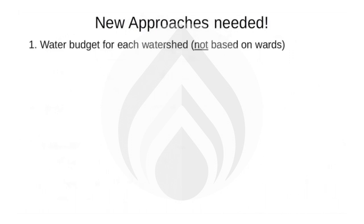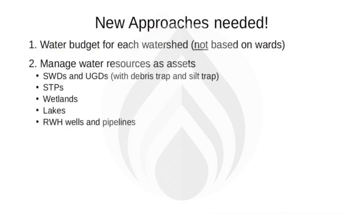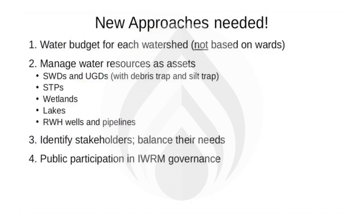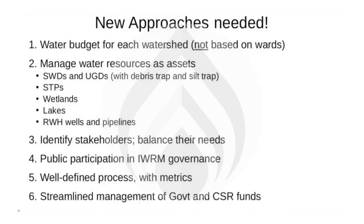This calls for a paradigm shift in multiple areas. For each watershed, set up a water budget accounting for incoming and spent water. The water resources will be our lifeline — we must treat them as precious assets. Identify all stakeholders in the area and balance their needs. Involve the public in water resource management and make all data public. Establish well-defined processes and declare them as public charters. Define metrics for all processes and share data in the public domain. Streamline the funding for water resource management.